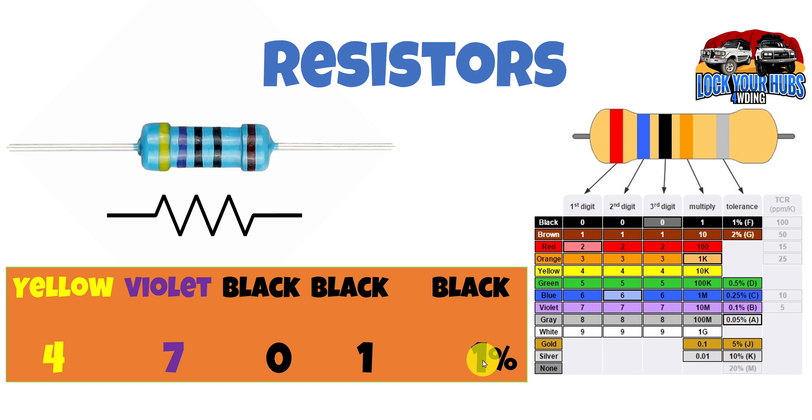And that is number one with black. And then we have a tolerance band. Now a tolerance band here is one percent. So we have four, seven, zero or 470 times by our multiplier which is one gives us obviously 470 with a tolerance of one percent. So that's a tolerance range of how accurate the resistor actually is. So we have a 470 ohm resistor with a tolerance of one percent. And that's how you read resistors.